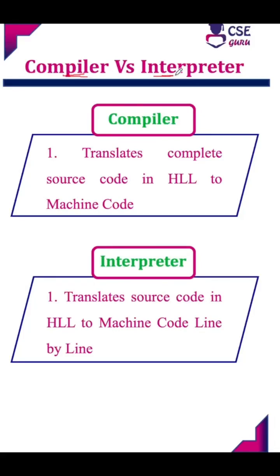The difference between a compiler and an interpreter: a compiler converts the complete source code in a high-level language to machine code, whereas an interpreter converts the source code to machine language line-by-line.